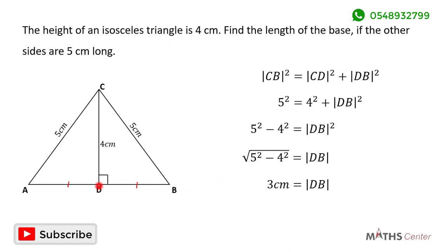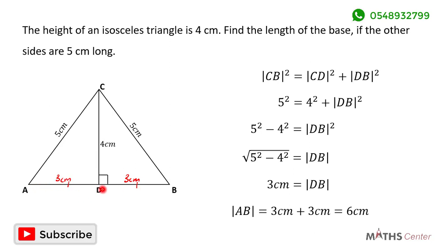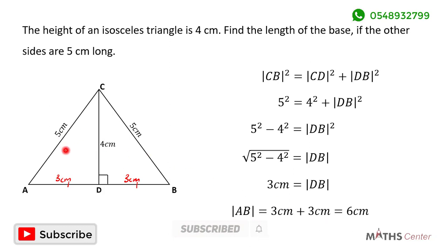So DB equals the square root of 5 squared minus 4 squared, which gives us 3 cm. The length of side DB is 3 cm, and since AD equals DB, the length of AD is also 3 cm. The base AB equals AD plus DB, which is 3 cm plus 3 cm, giving us 6 cm. So in this isosceles triangle, the length of the base is 6 centimeters.